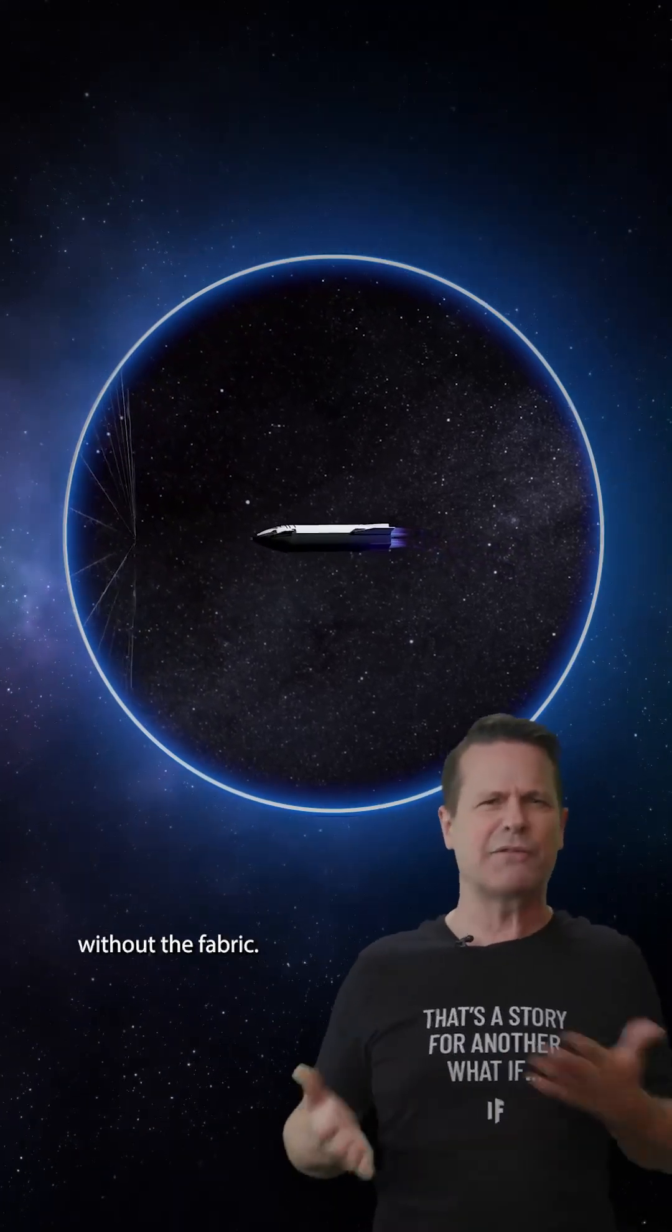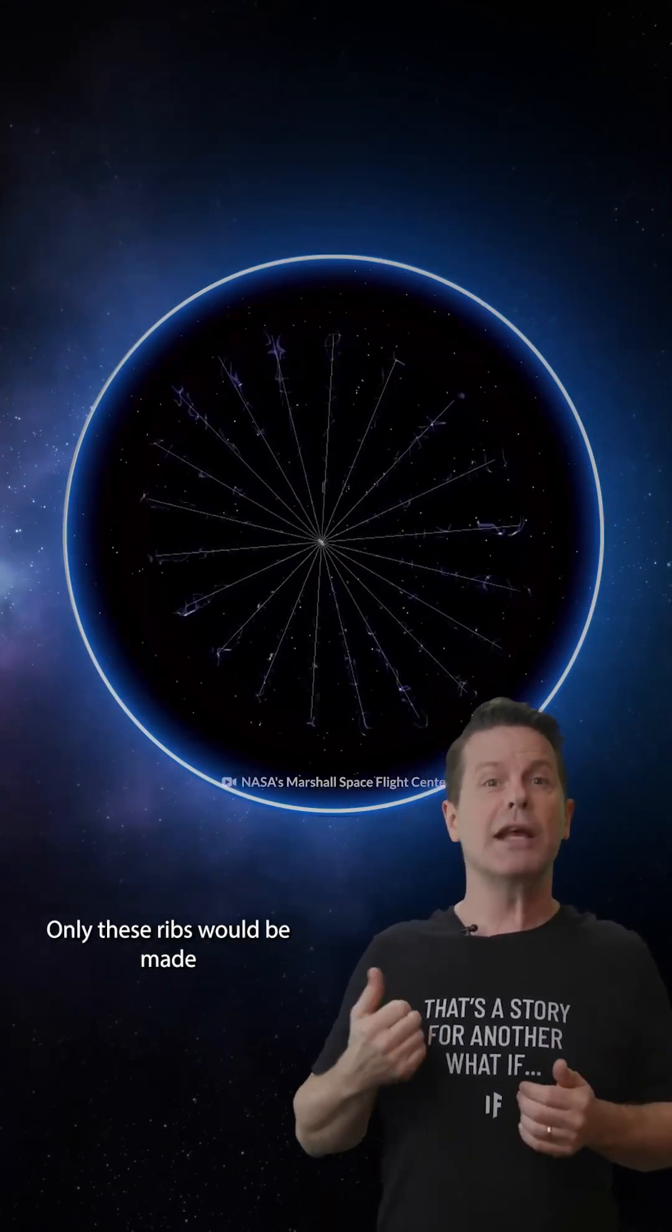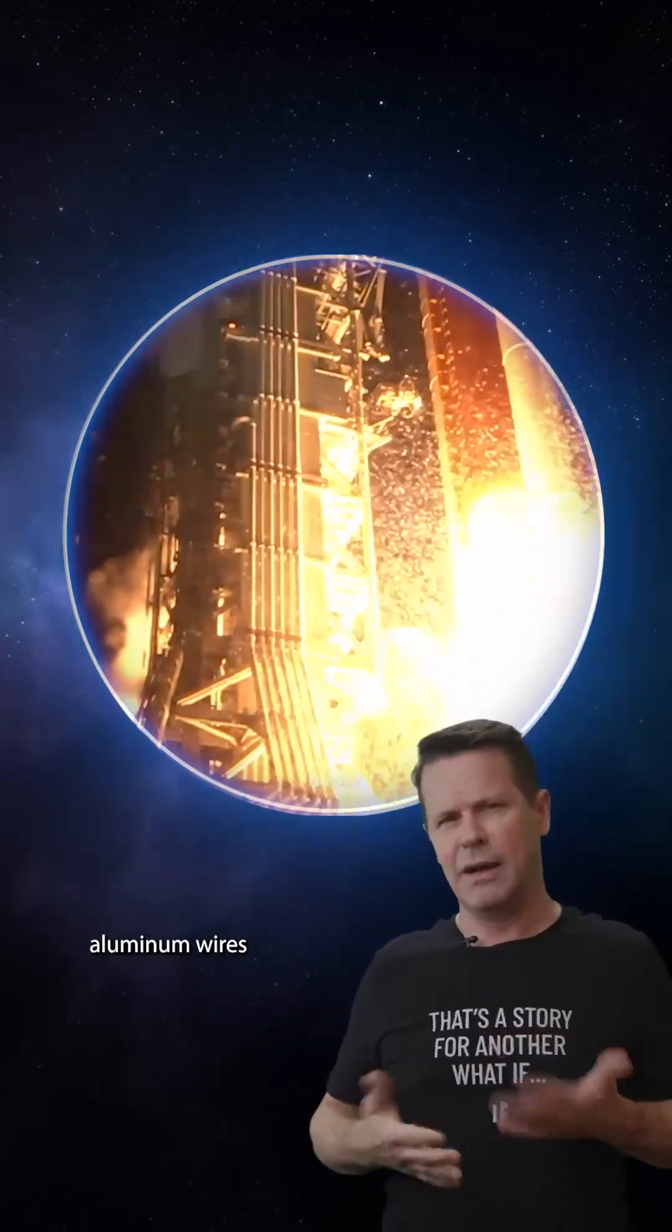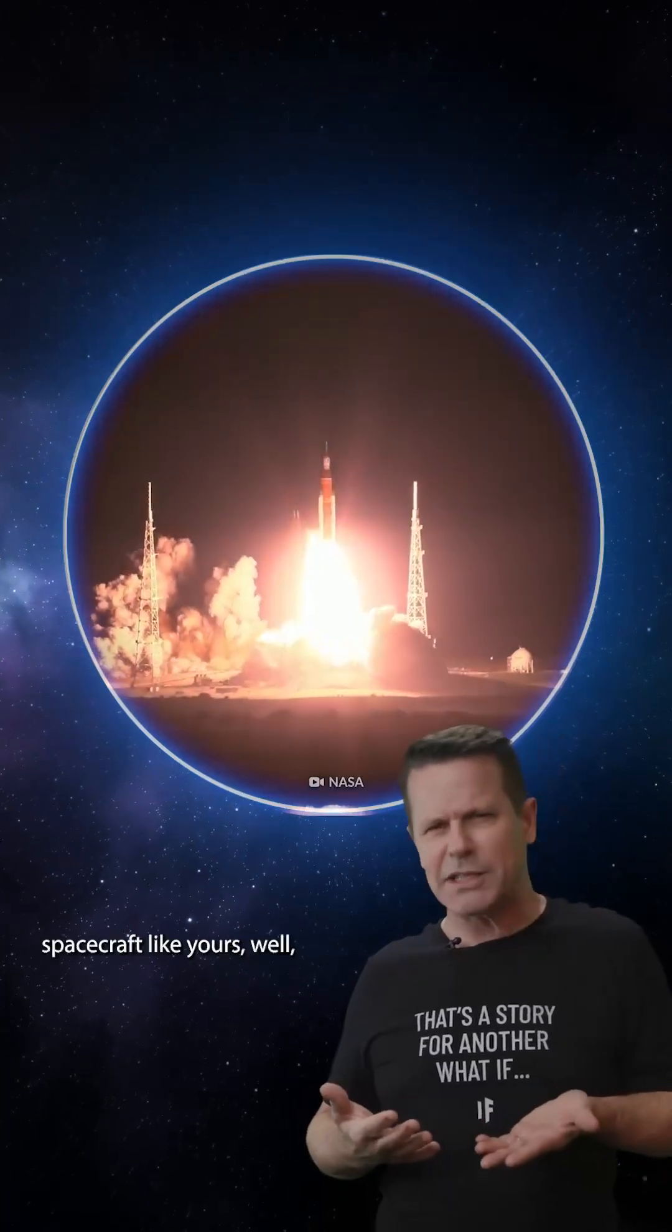They're kind of like an umbrella without the fabric. Only these ribs would be made of electrically charged aluminum wires. With a 1,000 kilogram spacecraft like yours,